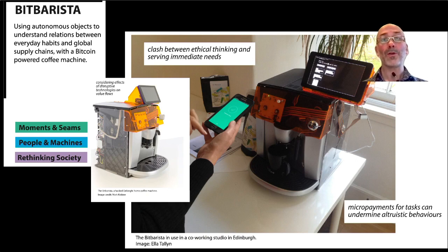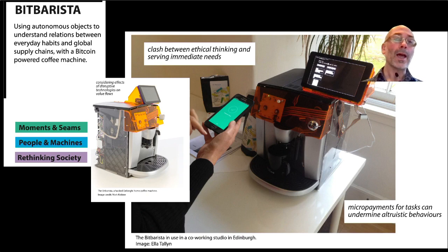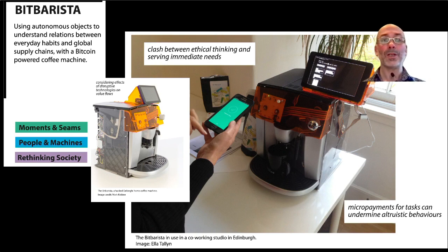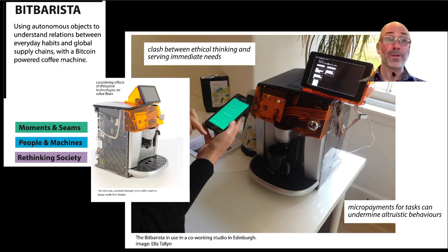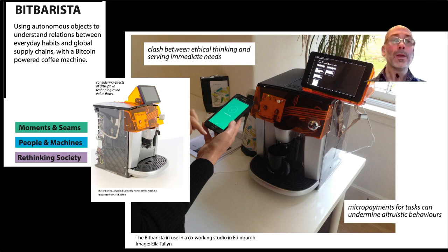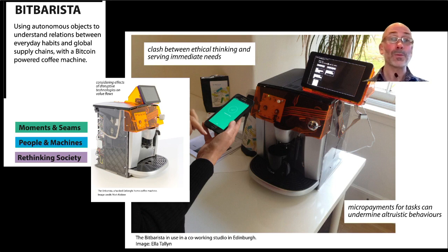Bitburista is a bitcoin-enabled coffee machine that explores cryptocurrency, autonomous objects, and supply chains. It has its own bitcoin wallet and it negotiates with its users about the supply chains of the coffee they consume. It explores interactions with the machine and perceptions of new models of buying coffee both in the lab and in the wild. This highlighted the quotidian issues of maintenance once the technological excitement had subsided, and it also showed how the machine disrupted existing rituals. The micropayments offered to participants for small tasks were generally not enough to make up for the disruption, and it undermined their sense of altruism and community.